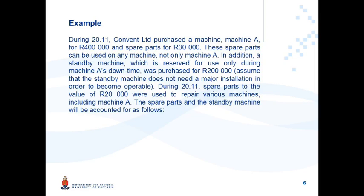Let's look at an example. This company incurred specific costs relating to its Property Plant and Equipment. It purchased Machine A for 400,000 Rand and spare parts for 30,000 Rand. The spare parts can be used on any machine, not only Machine A. In addition, a standby machine was purchased and is specifically reserved for use only during Machine A's downtime, purchased for 200,000 Rand. You may assume the standby machine does not need a major installation in order to become operable. During 2011, spare parts to the value of 20,000 Rand were used to repair various machines, including Machine A. The issue at hand is whether these costs — the debit leg — can be capitalised to PPE, classified as inventories, or expensed in the statement of profit or loss.